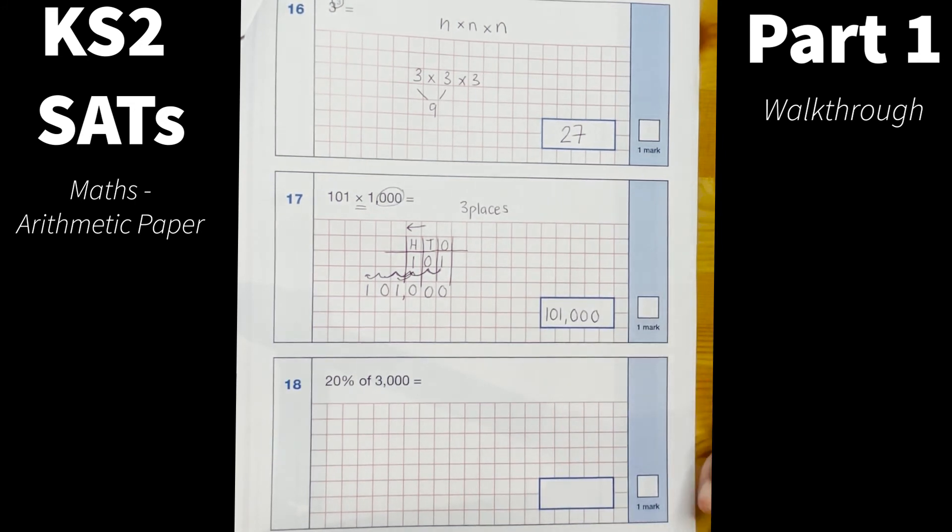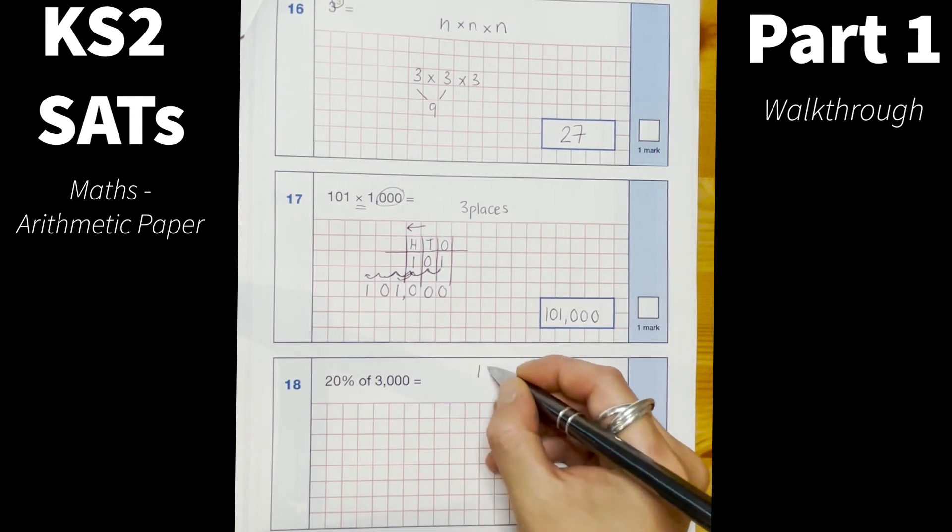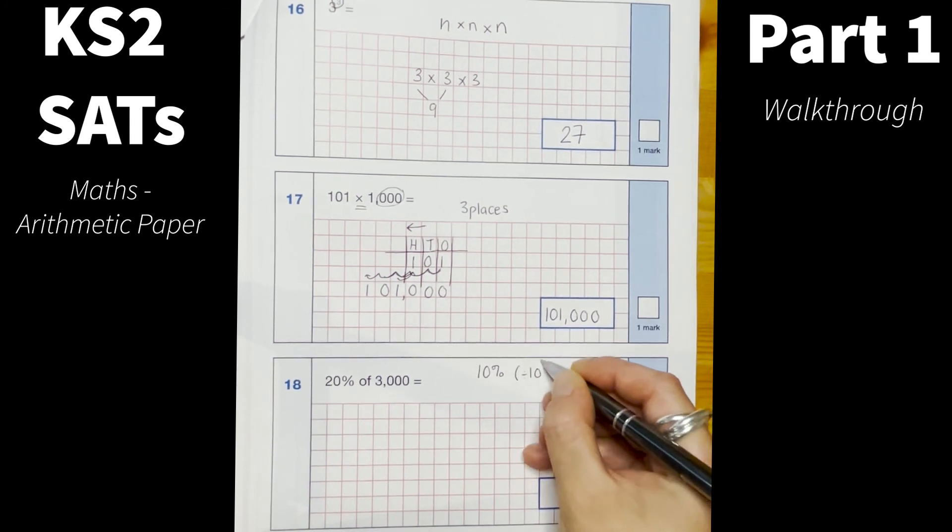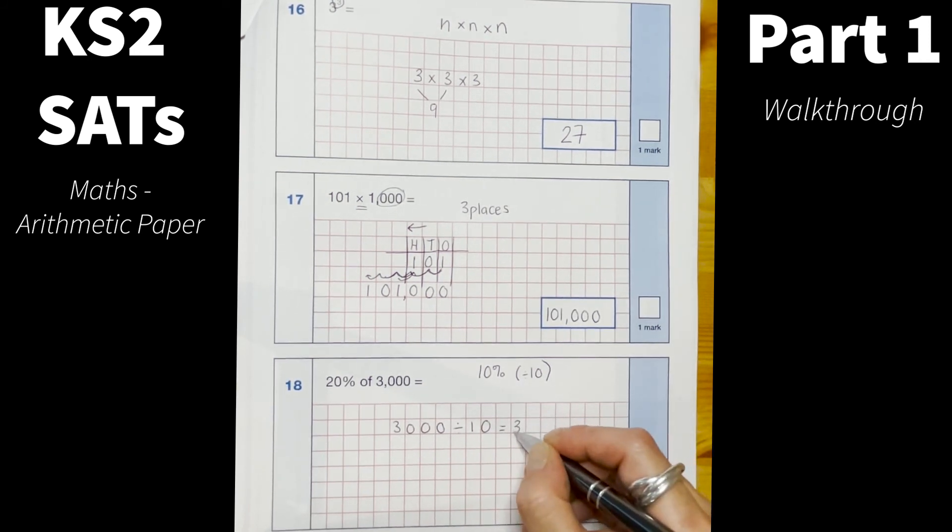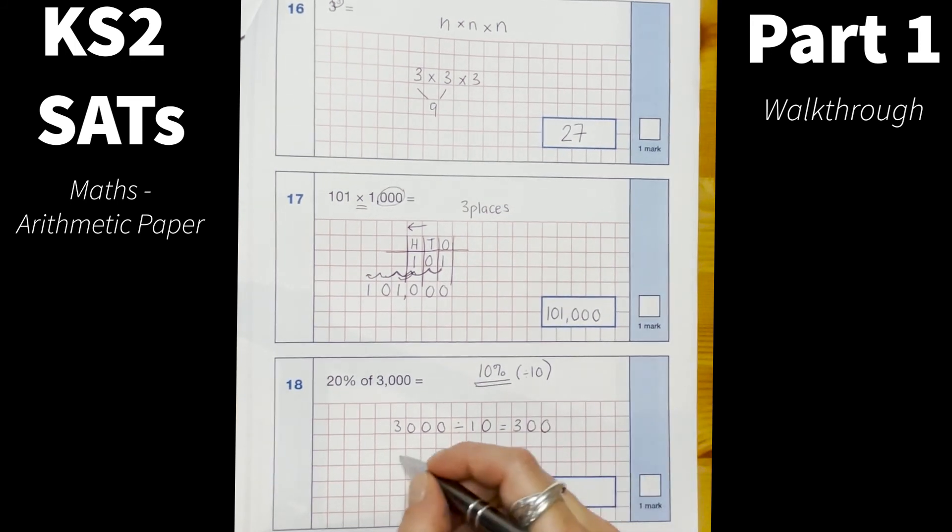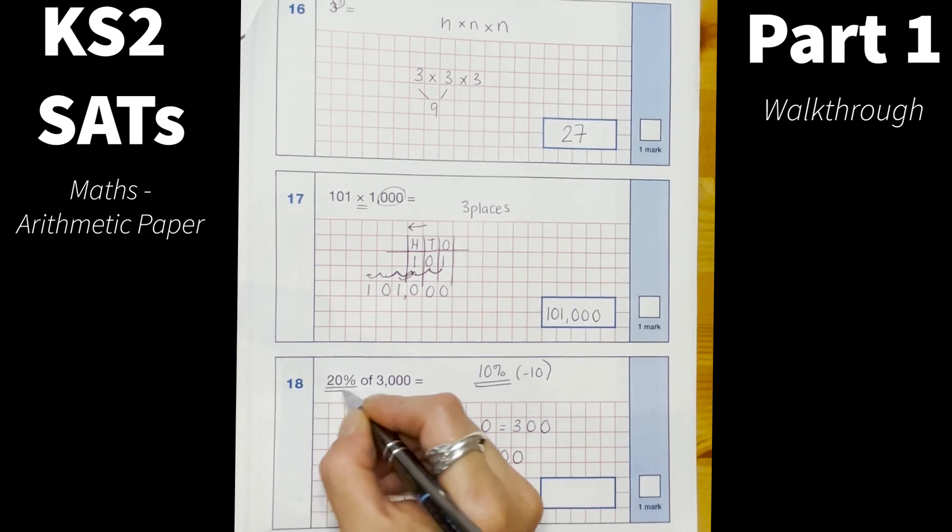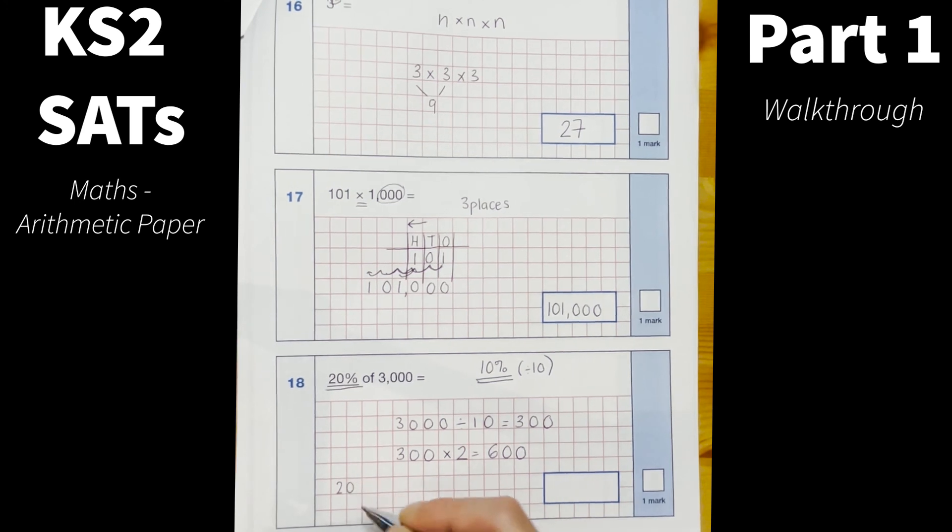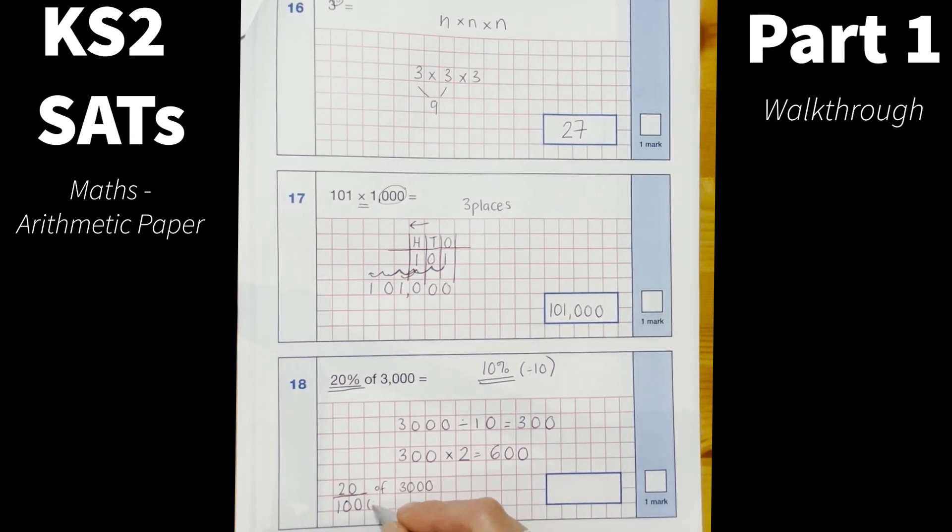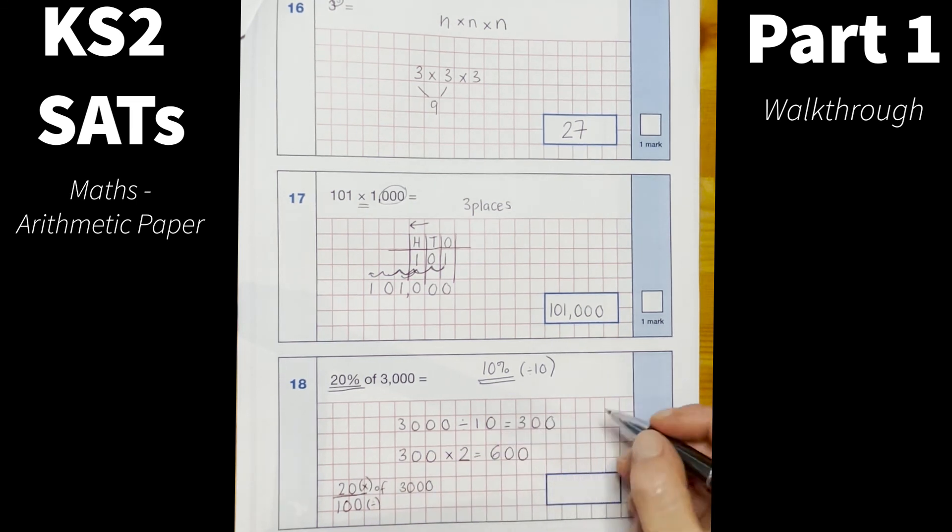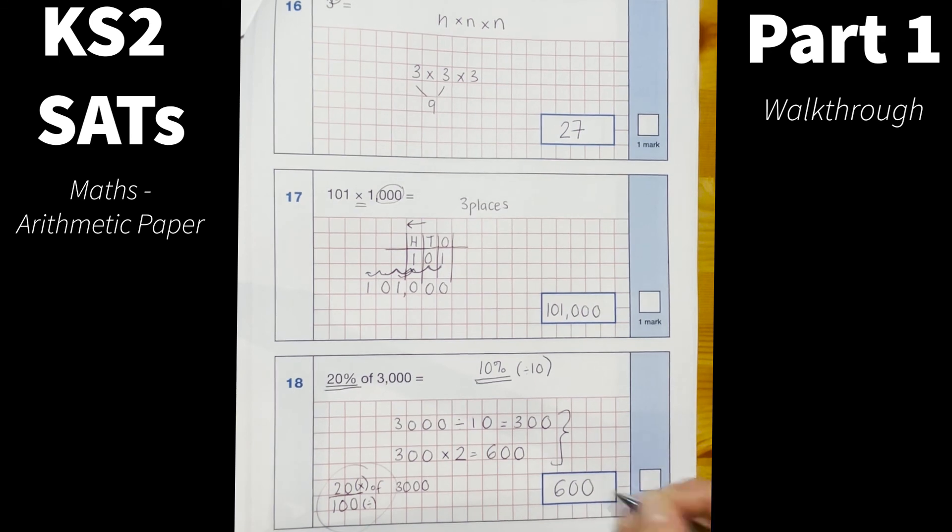And then the last one number 18, 20% of 3000. So an easy way that I can do this, there's lots of different ways to do percentages which I'll explain in a minute, but I know to find 10% I need to divide by 10. So I need to do 3000 divided by 10 which gives me 300, and I need to know what two lots of 10% is going to be, so I need to do 300 times by 2 which gives me 600. Another way I can do this, and it works when we've got harder percentages, is you can put your percentage into a fraction so that's 20 over 100, and then you divide by the denominator and multiply by the numerator, which is really similar to what we've just done here. But this method works say if you've got, if it's not a multiple of 10. So I put my answer in here is 600.